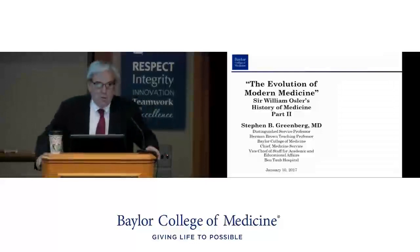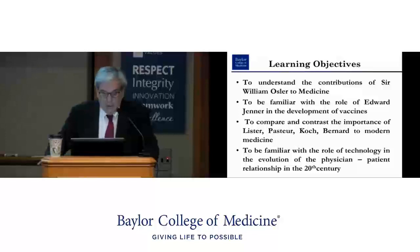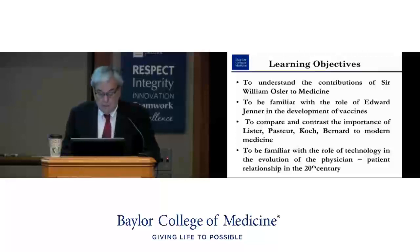This is part two on the evolution of modern medicine as described by William Osler's book on the subject. Our learning objectives are to understand the contributions of William Osler to medicine, be familiar with the role of Edward Jenner in the development of vaccines, compare and contrast the importance of Lister, Pasteur, Koch, and Bernard to modern medicine, and be familiar with the role of technology in the evolution of the physician-patient relationship in the 20th century.